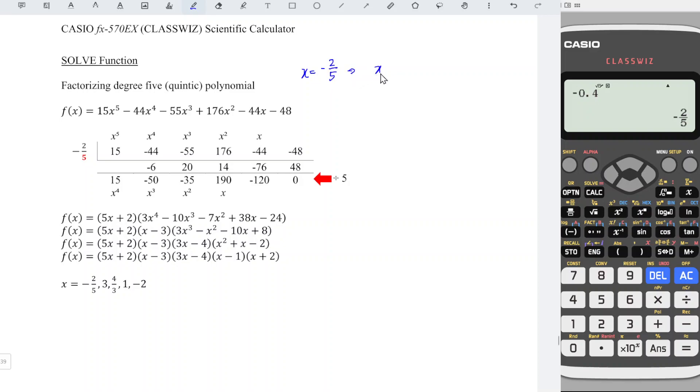Which means that if we bring everything to the left, minus bring over become plus 2 over 5 is equal to 0. Then x plus 2 over 5 is a factor.